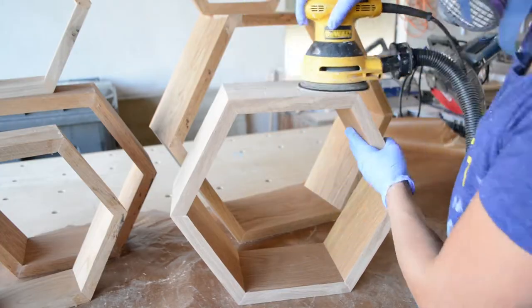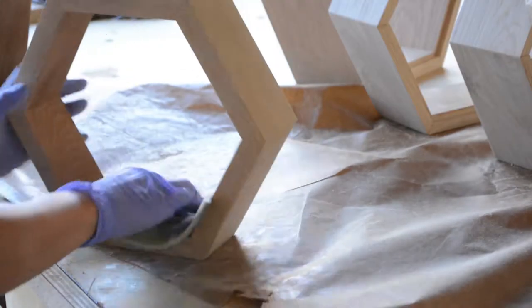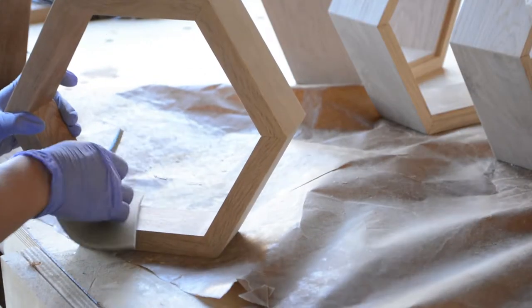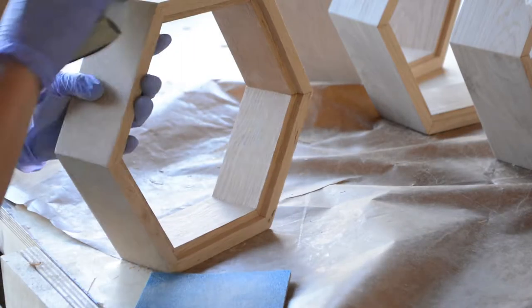I continue with a 150 grit sanding net to smooth out the faces. Finally I finish the inside and outside with a 220 grit sanding sponge and gently touch the outside corners with 150 grit sandpaper.